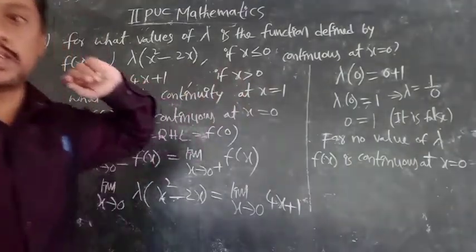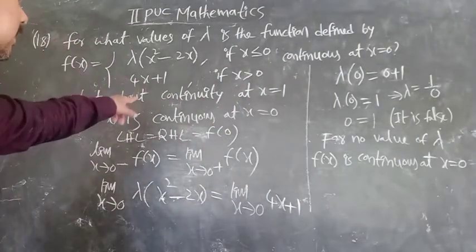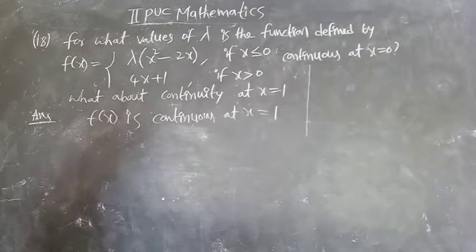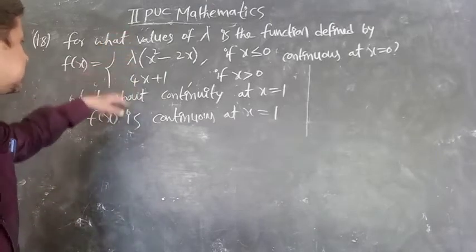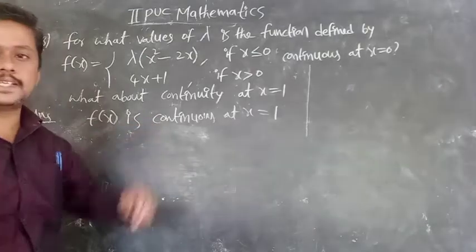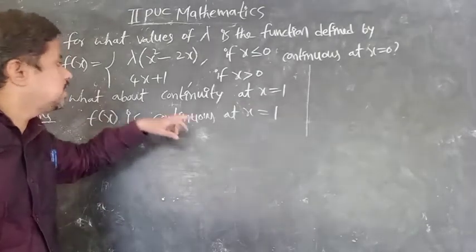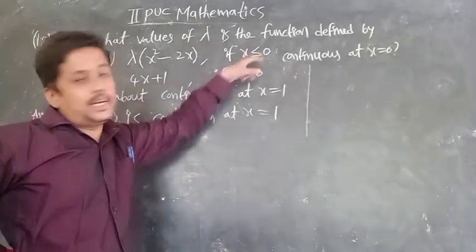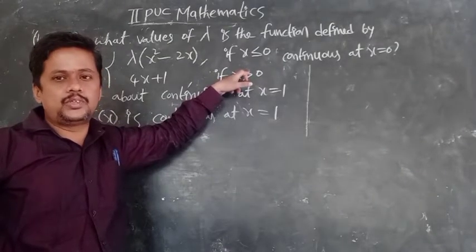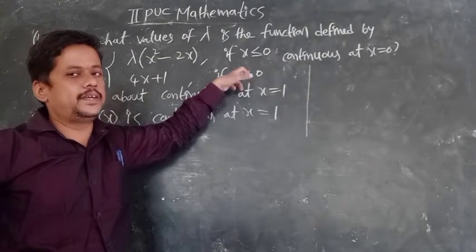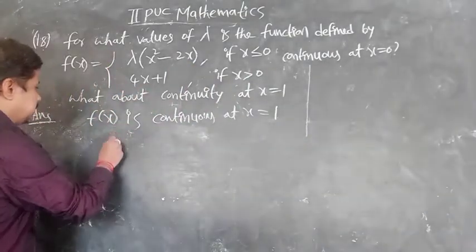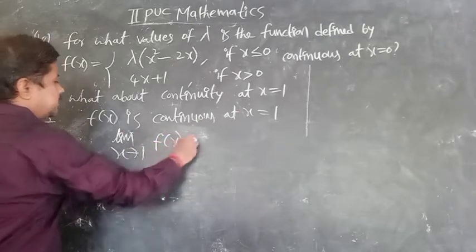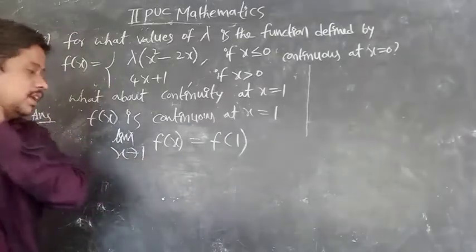Next, what about continuity at x = 1? At x = 1 we cannot use LHL and RHL separately because x = 1 is not a boundary point of the piecewise definition. That is why we use the first formula: limit as x tends to 1 of f(x) = f(1).